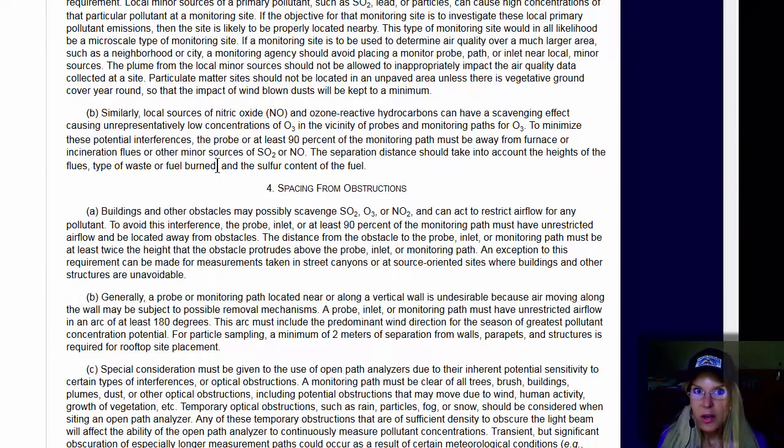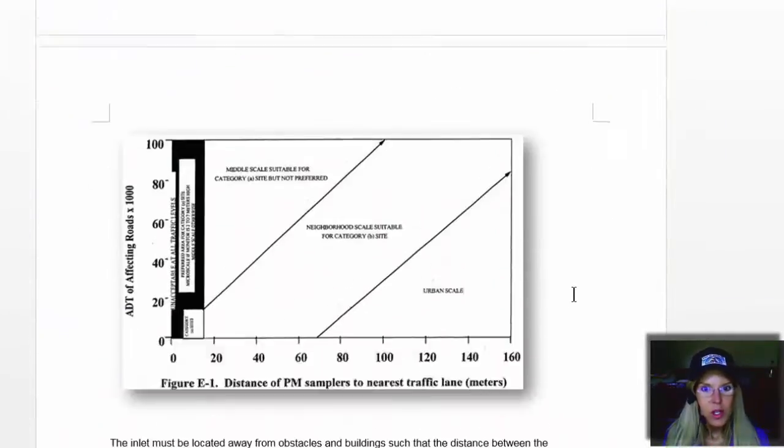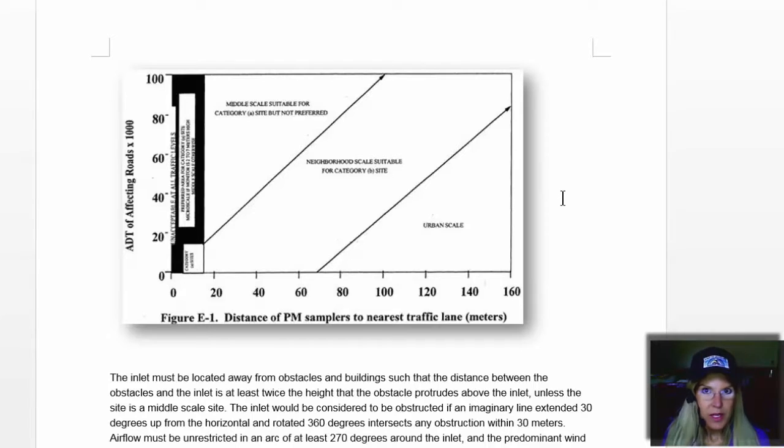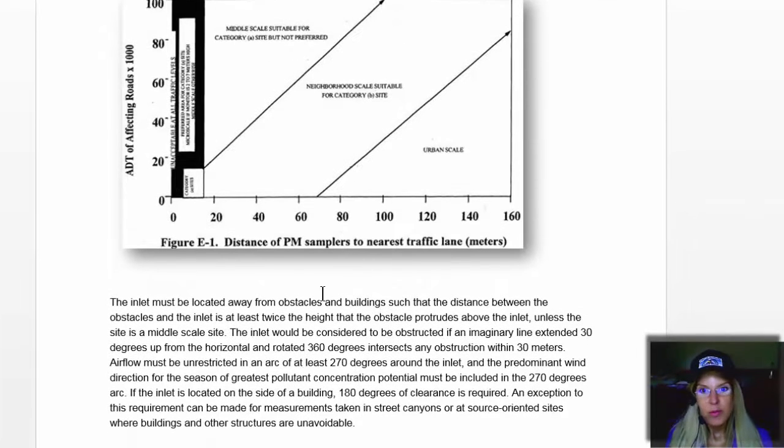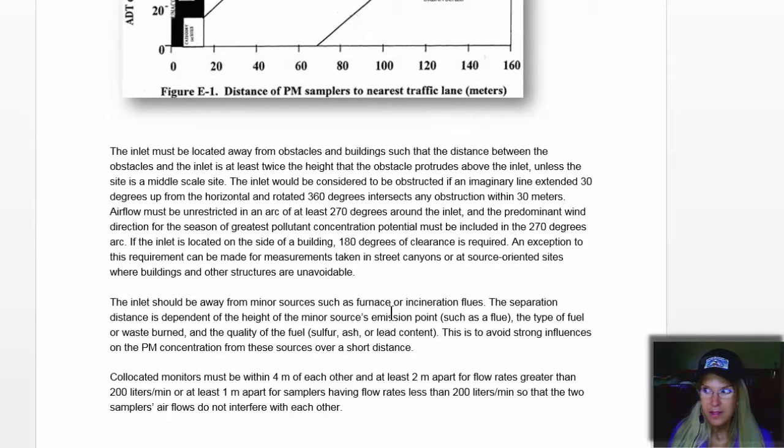So this is an easy way. Just look up eCFR and find the definitions. And then you could just copy and paste this material from eCFR and say these are the requirements and our site meets them. There is a table which you can copy from Appendix E for PM sampler distance to traffic lanes based upon the average daily traffic and the scale of representativeness. And then restate what you've read and how your site and your particular probe sighting meets those requirements.